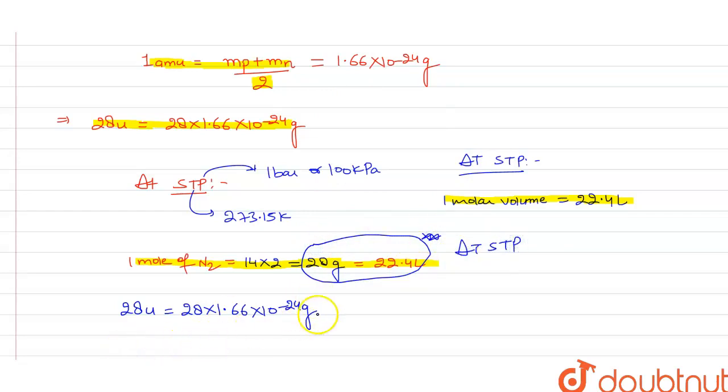So it becomes 22.4 liter × 1.66 × 10^-24. So on solving we get 37.184 × 10^-24 liter.